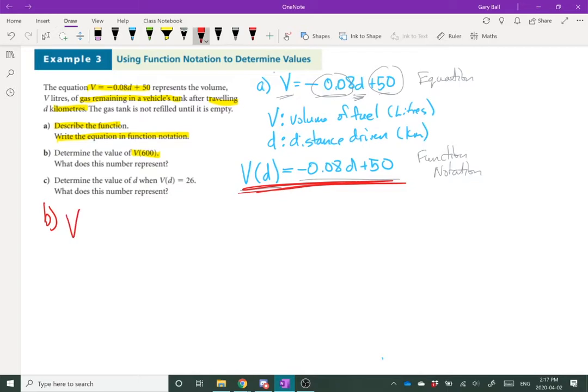So let's start V. Now instead of the D, I'm going to put 600 kilometers into that spot. Equals now I'm going to start writing everything out, except anywhere where there's a D. I'm going to replace that D with 600 kilometers. Plus 50.